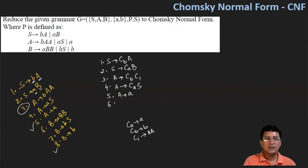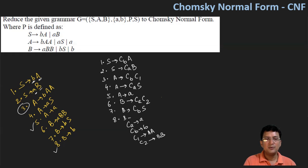For production number 6, B produces small A, capital B, capital B. On the right-hand side there are three symbols, which is not allowed. So we change small A to CA, and we introduce C2, where C2 produces capital B, capital B. For production number 7, B produces small B and capital S, so we can write CB and capital S. Production number 8, which produces small B, is already in Chomsky Normal Form.